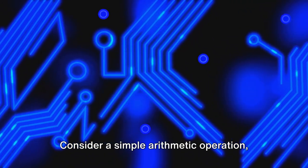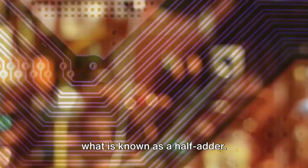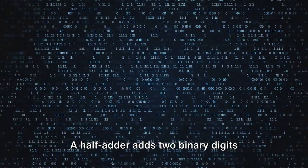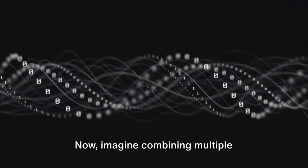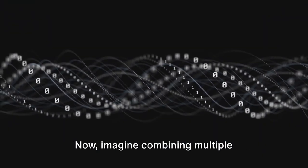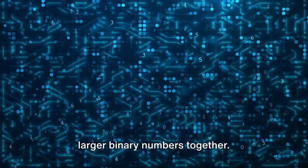Consider a simple arithmetic operation like addition. This operation can be performed using a combination of AND and XOR gates, forming what is known as a half adder. A half adder adds two binary digits together and outputs a sum and a carry value. Now imagine combining multiple half adders together. This forms a full adder which can add larger binary numbers together.